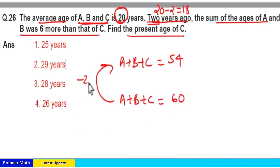Now, 2 years ago, A reduced by 2 years, B reduced by 2 years and C reduced by 2 years. Total, 6 years reduction from 60. So, 60 minus 6, 54 years is the sum of ages of A, B and C 2 years ago.